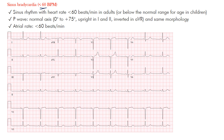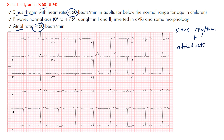In sinus bradycardia, we're looking for two things: the presence of sinus rhythm, and an atrial rate — notice I said atrial, not ventricular — of less than 60 beats per minute. So it's sinus rhythm plus an atrial rate less than 60 beats per minute.